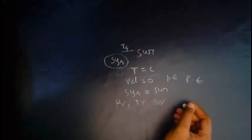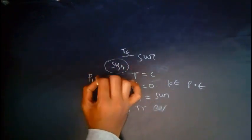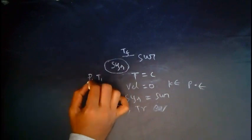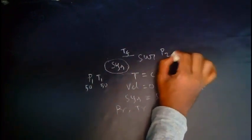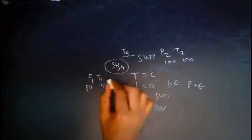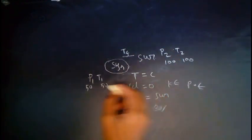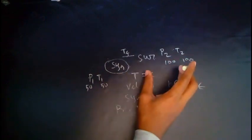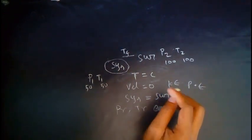We can also state it like this: if the system has a certain pressure P1 and temperature T1 — let's assume both are 50 — and the surrounding has pressure P2 and temperature T2, both having a value of 100, then when the system and surrounding start operating, the system values will get nearer to the surrounding values, until at some instant the two values become equal.